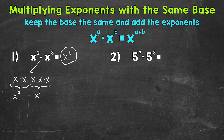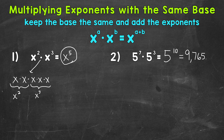Let's move on to number 2, where we have 5 to the power of 7 times 5 cubed. Keep the base the same — our base is 5. And then we add the exponents. So 7 plus 3 is 10. So 5 to the 10th power, which equals 9,765,625.